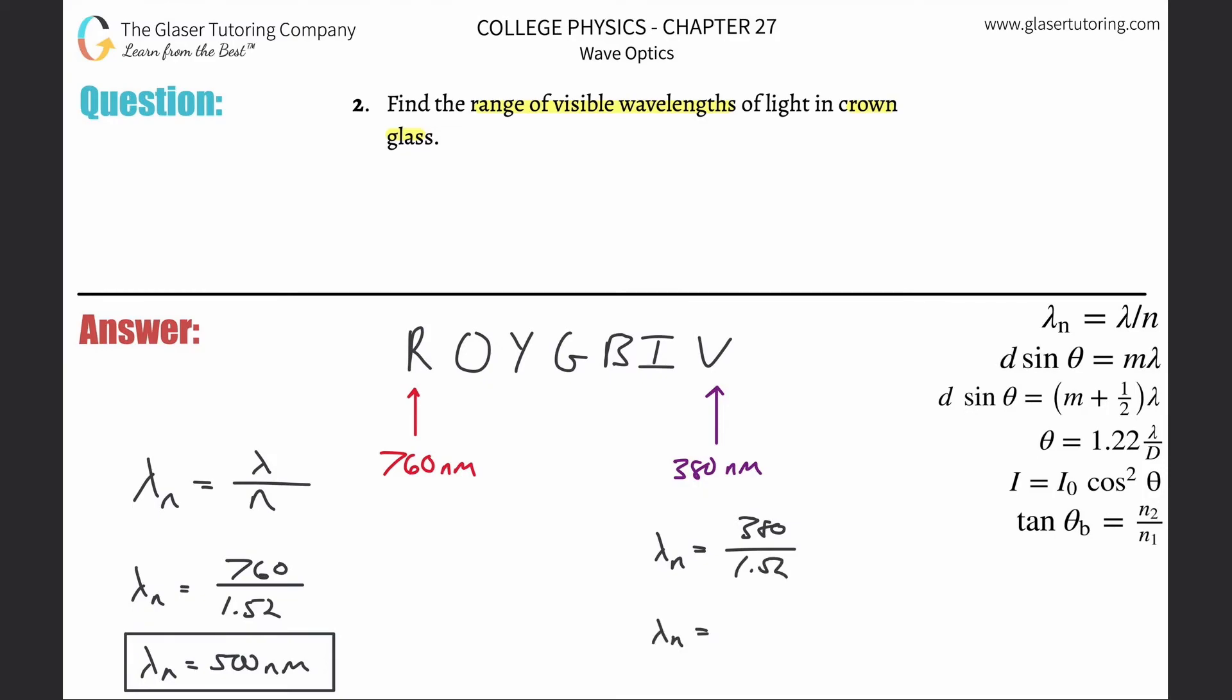So 380 divided by 1.52, and voila, about 250 nanometers.